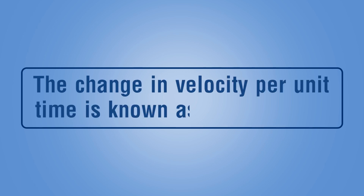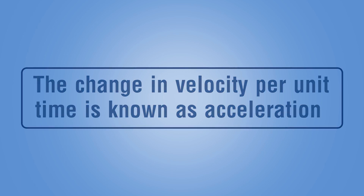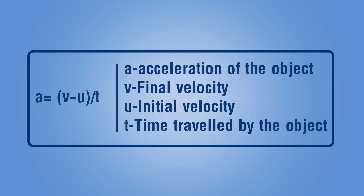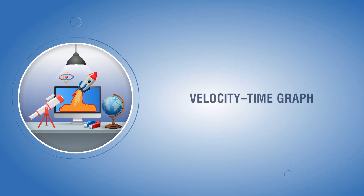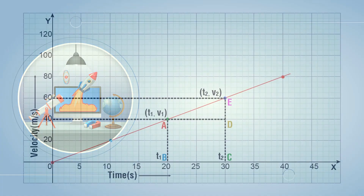Speed does not consider the direction of the object; velocity considers the direction of the object. The change in velocity per unit time is known as acceleration. If an object moving with an initial velocity u at time zero attains the final velocity v in time t, then the acceleration a is equal to (v minus u) divided by t. Acceleration is also a vector — if the acceleration is in the direction of velocity, it is positive; if in the opposite direction, it is negative.